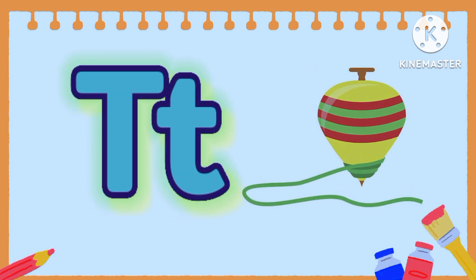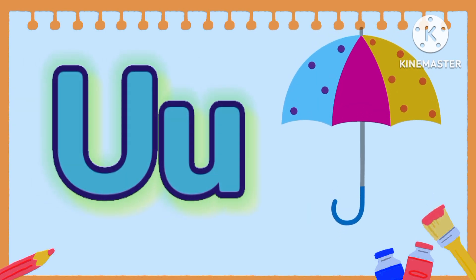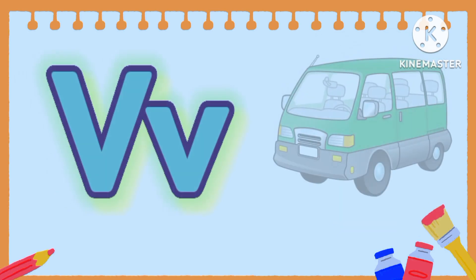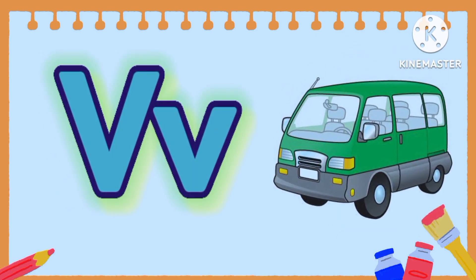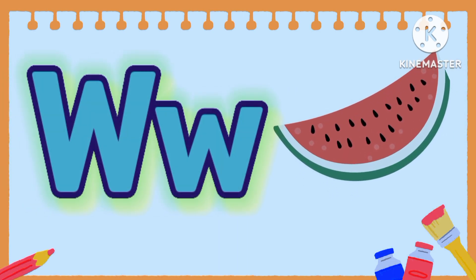T is for Dog. U is for Umbrella. V is for Red. W is for Watermelon.